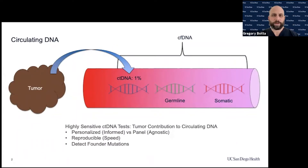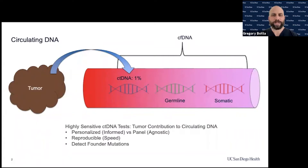The circulating tumor DNA is thought to be about 1% of all circulating free DNA, and most of our tumor DNA tests are derived from the tumor as well as the liquid ctDNA analysis. This provides a personalized or informed approach to evaluate a patient for residual disease, or whether they're responding to treatment. This is compared against most panels, which are agnostic — either the patient has the genes on that panel or they do not — and that's why the sensitivity is greatly reduced.